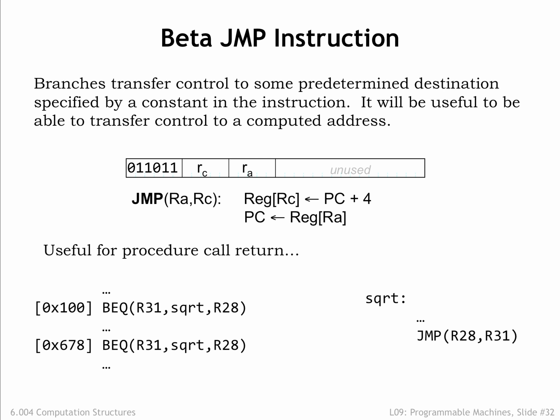Suppose we have a procedure square root that computes the square root of its argument, which is passed in R0. We don't show the code for square root on the right except for the last instruction, which is a JUMP. On the left we see that the programmer wants to call the square root procedure from two different places in his program. Let's watch what happens.